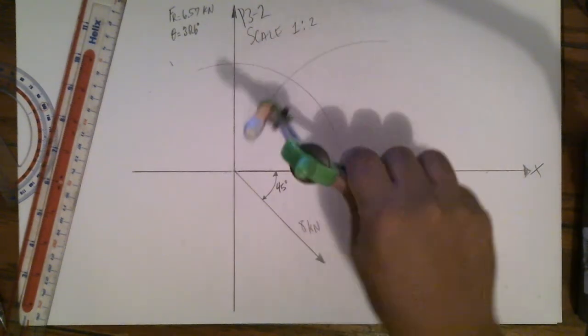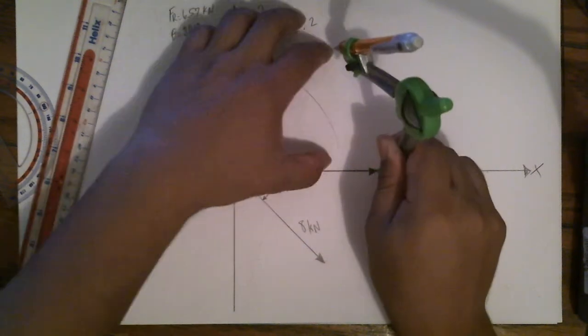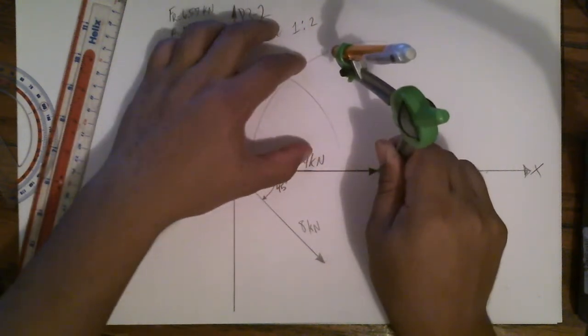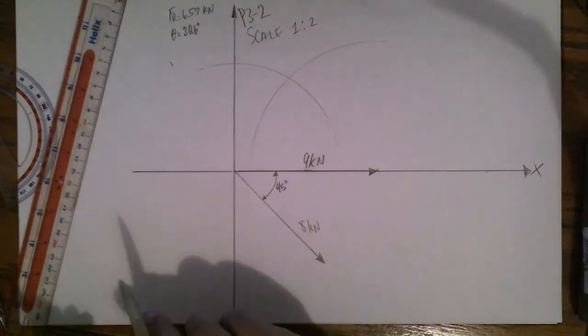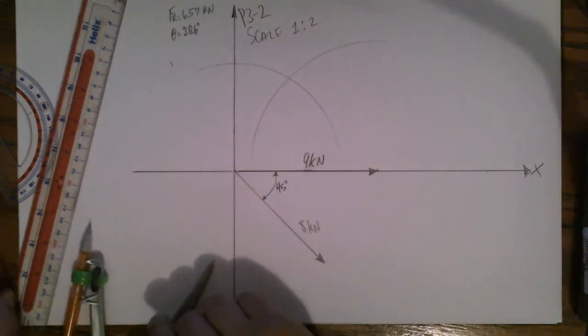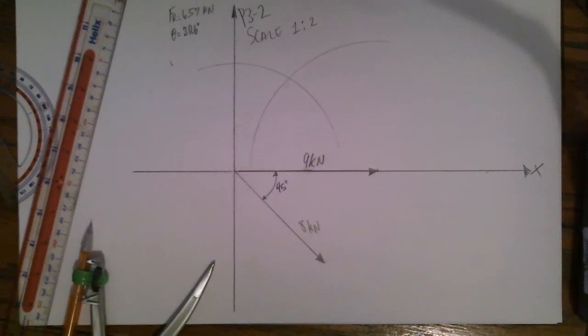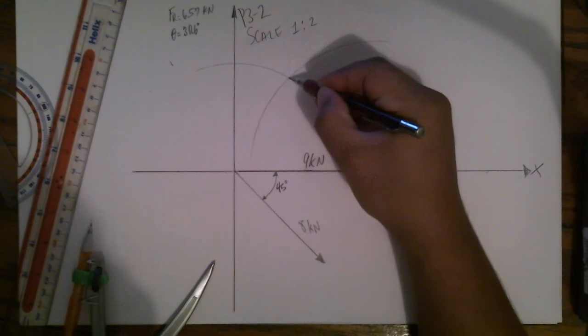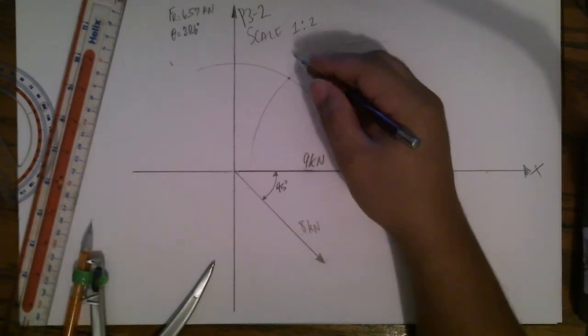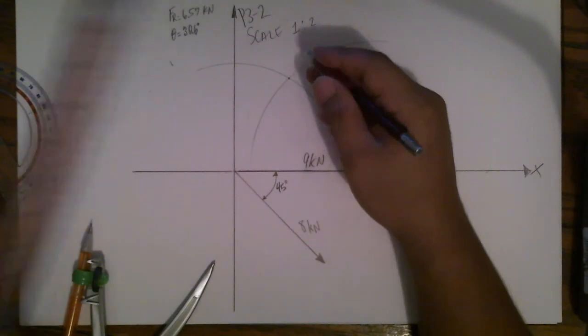Again, you don't have to draw the whole circle, it's just this quadrant here. This is where that vector is located. The end of the unknown vector T is located where the two circles meet. So right here where these two circles meet, that's the end of the vector. So draw a line from the origin to the intersection.